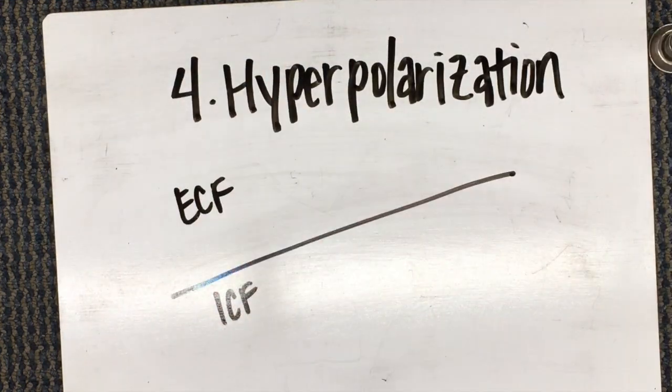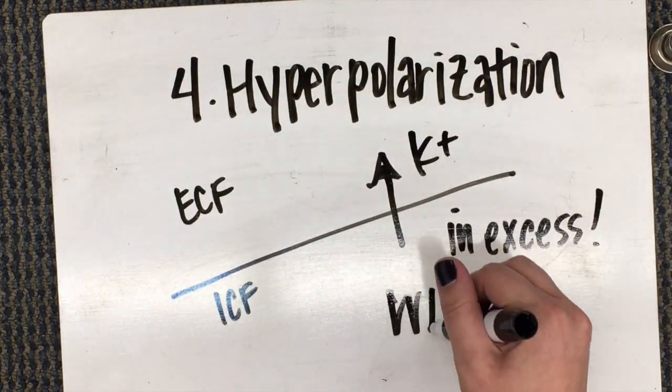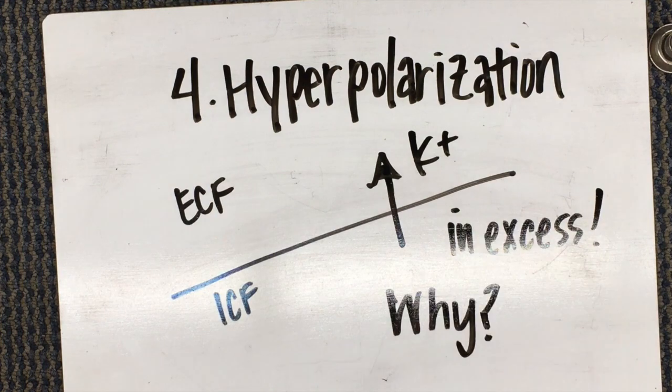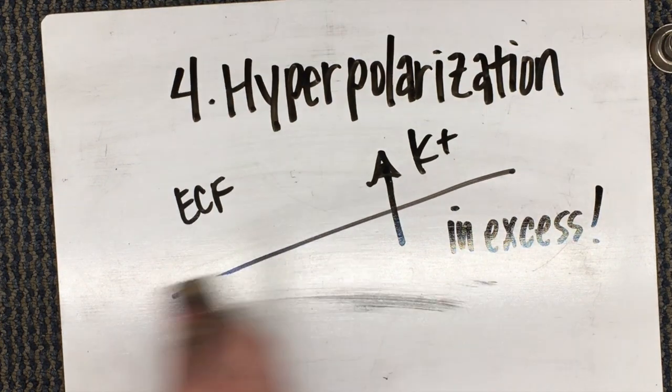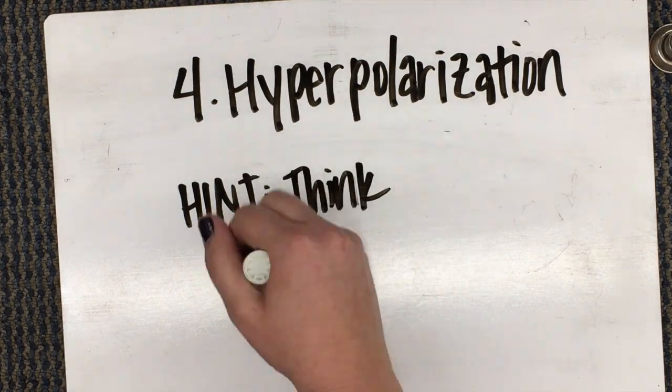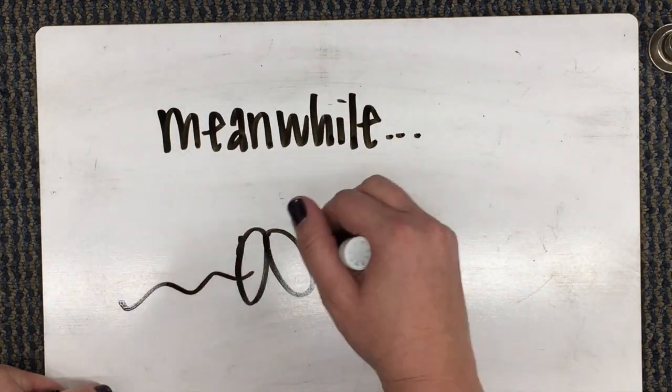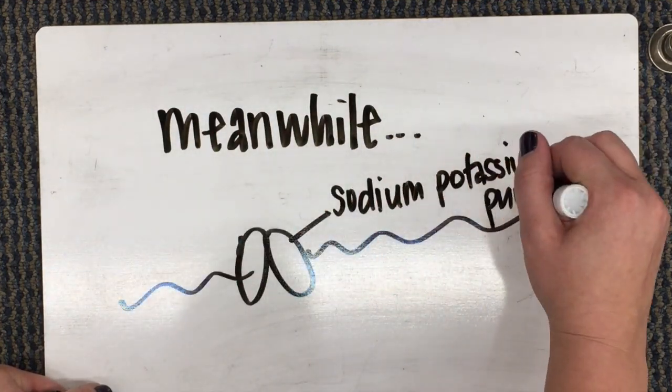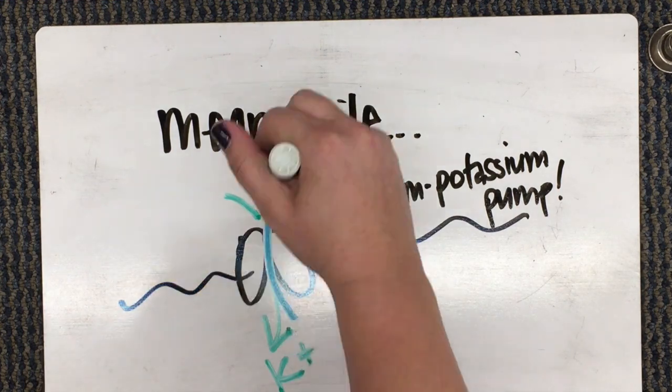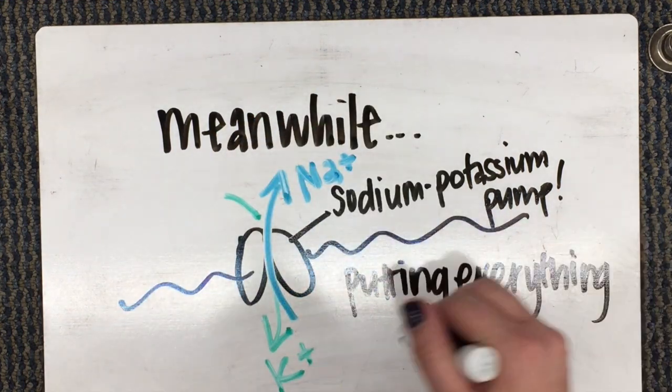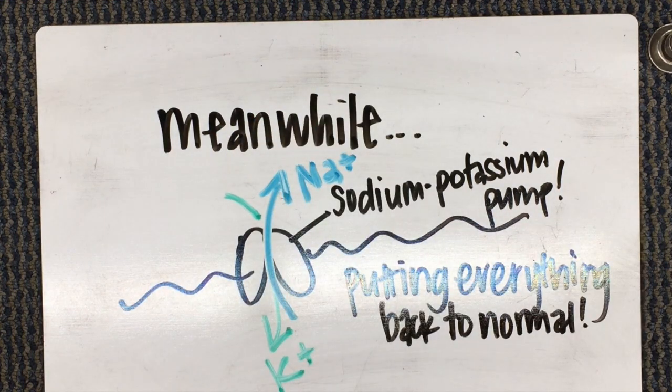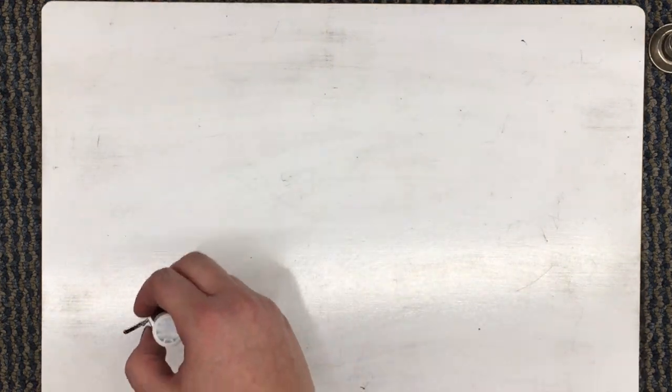In step four, hyperpolarization, a larger amount of potassium exits the cell. This happens as a safeguard to keep us from sending a second stimulus too soon. Think about those relative versus absolute refractory periods. Meanwhile, to get everything back to normal, the sodium-potassium pump pumps potassium back into the cell and sodium back out, getting every ion back in its original spot.